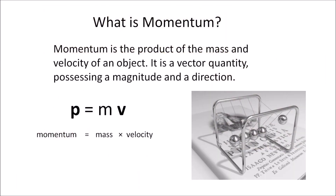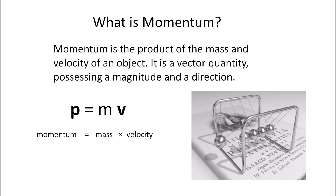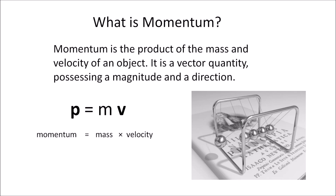In Newtonian mechanics, momentum is the product of the mass and velocity of an object. It is a vector quantity possessing a magnitude and a direction. The total momentum remains constant in a closed system that does not exchange any matter with its surroundings and is not acted upon by external forces. Momentum is generally represented by the letter P in boldface to indicate that it is a vector. Sometimes a vector is indicated by placing an arrow over the variable.